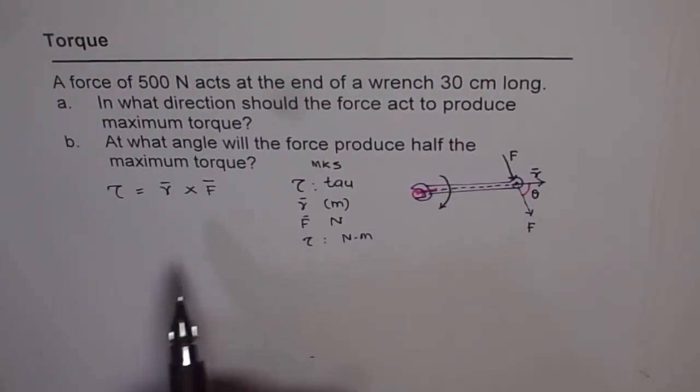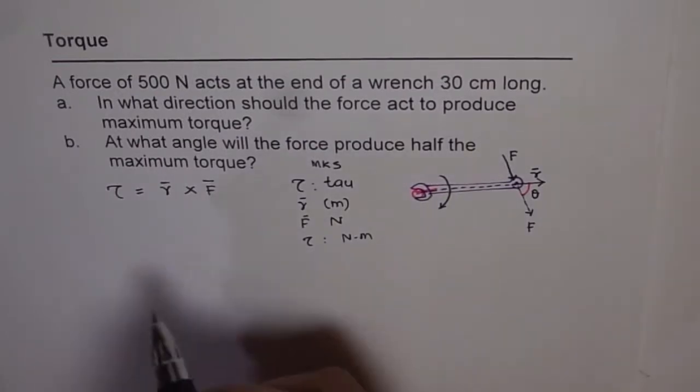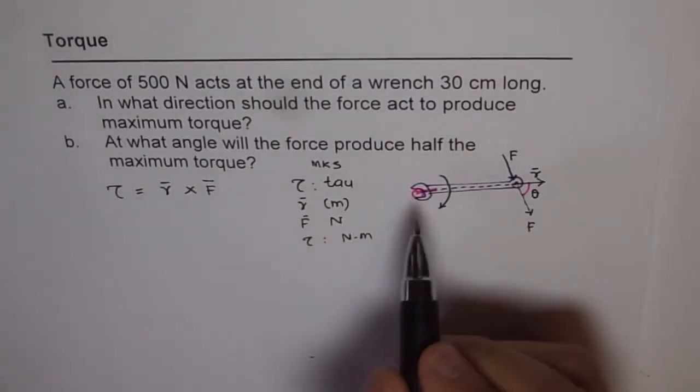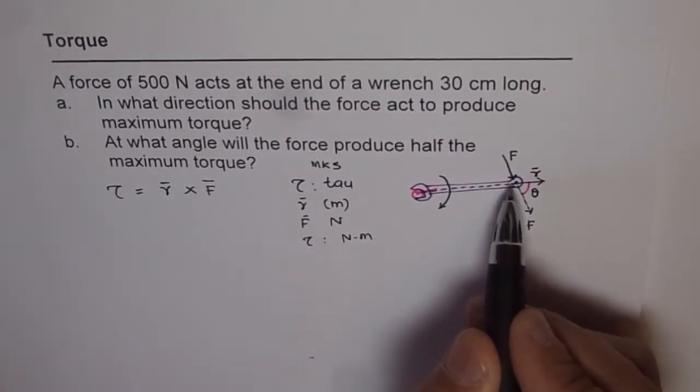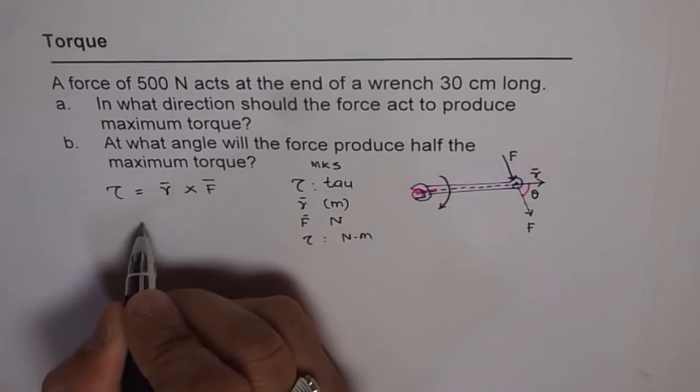I hope you understood our equation and why it is so. We have a couple of examples in which we will try to find torque. This is a basic example which will help you understand what torque is. Remember, r represents the arm length, F represents the force being applied, and the angle between them is theta.